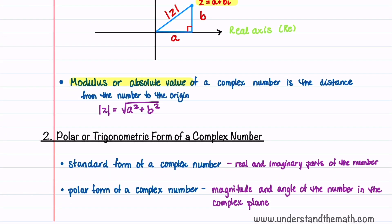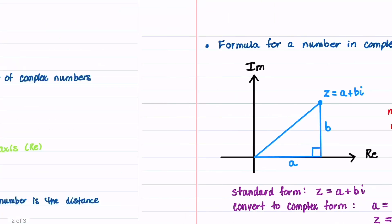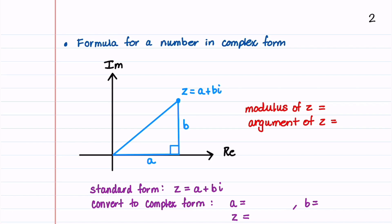Let's now go over the two steps we need to complete to write a complex number in polar or trigonometric form. The standard form is written in terms of its real and imaginary parts. The polar form is written in terms of the magnitude and angle of the number in the complex plane. The magnitude is called the modulus and the angle is called the argument. Our number in polar form will be written in terms of the modulus r and the argument theta. R is the distance from the origin to the complex number, and theta is the angle formed between the positive real axis and the line from the origin to the complex number.